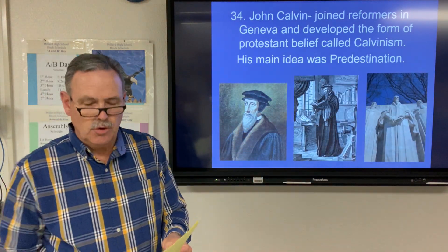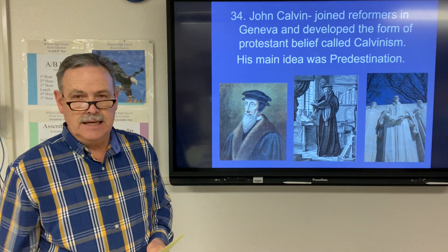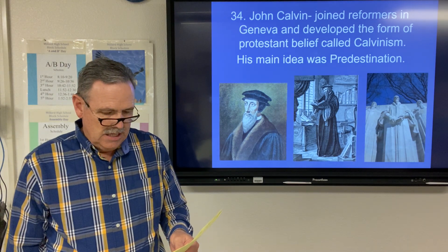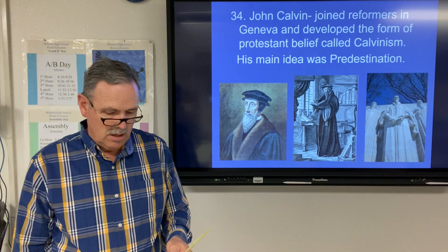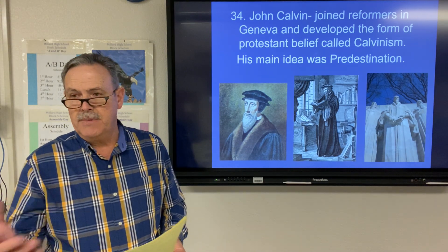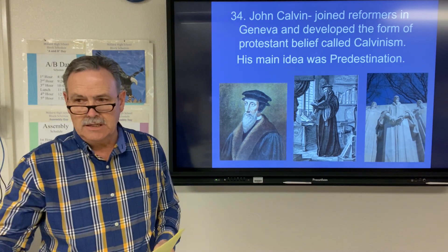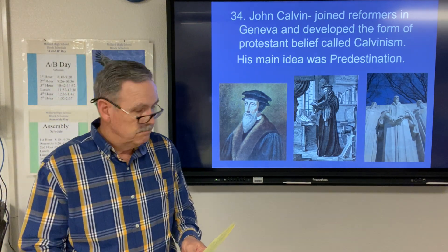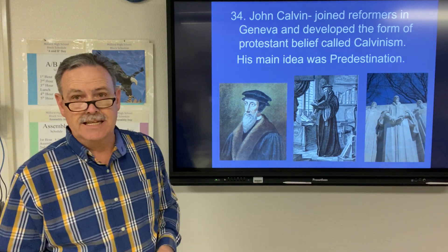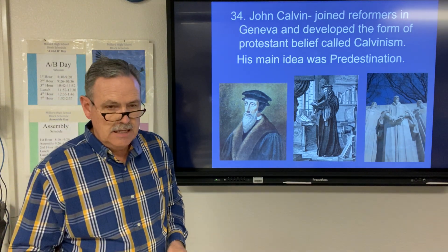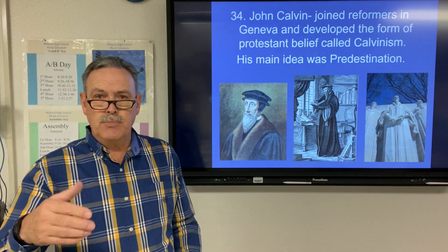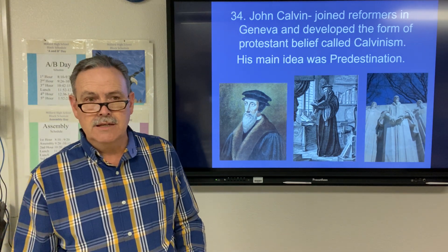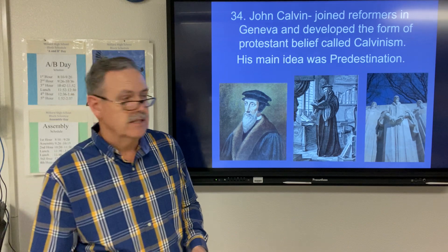Another man — John Calvin — joined Reformers in Geneva, Switzerland, and developed a form of Protestant belief called Calvinism. In many cases, changing one small thing could become a new religion. His main idea was predestination — having it predetermined whether you would be saved or not. It didn't matter what you did; it was already decided.